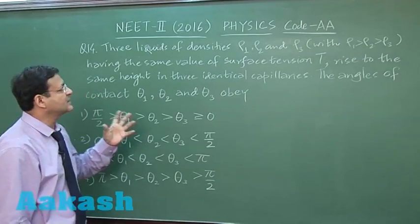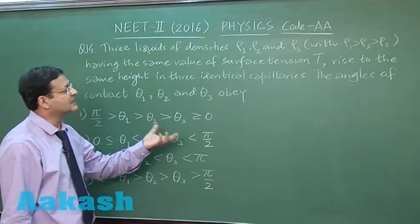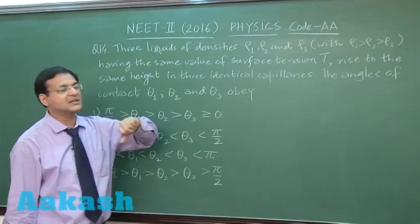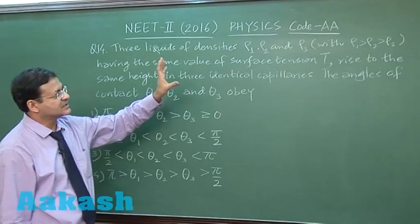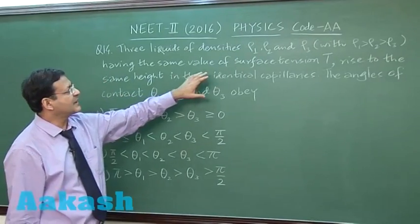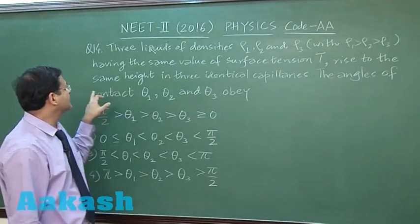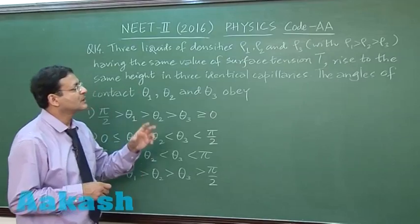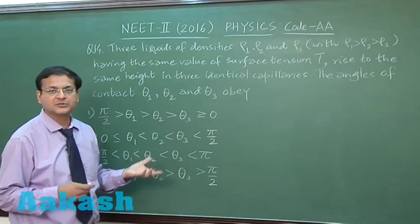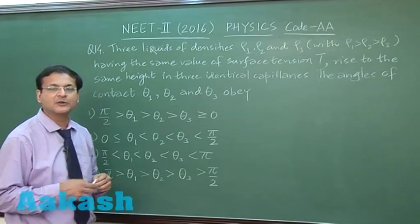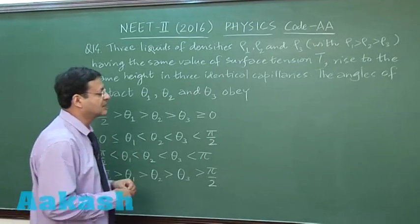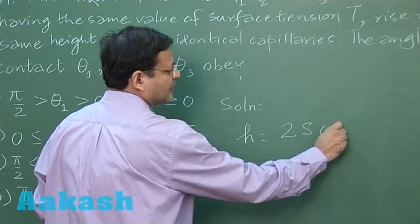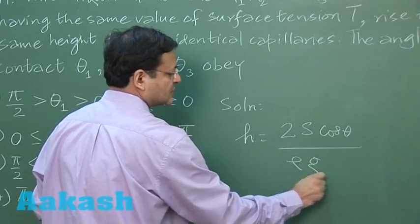Question 14 is once again based on surface tension and capillary rise. Three liquids of densities ρ₁, ρ₂, ρ₃ are given with the relation ρ₁ > ρ₂ > ρ₃. Having the same surface tension T, they rise to the same height in three identical capillaries — identical capillaries means the radius will be the same. We need to find the relation of the angles of contact. I am directly using the formula for capillary rise: h = 2S·cosθ / (ρ·g·r).